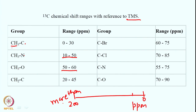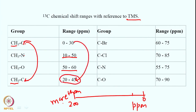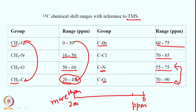Further for 13C chemical shifts: attaching Br shifts the carbon to 60–75 PPM; chlorine shifts it to 70–85 PPM. Attaching nitrogen gives approximately 55–75 PPM, while oxygen, being more electronegative with a greater electron-withdrawing effect, gives 70–90 PPM. These ranges illustrate how substituent electronegativity governs the 13C chemical shift.